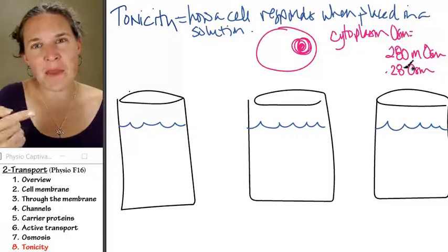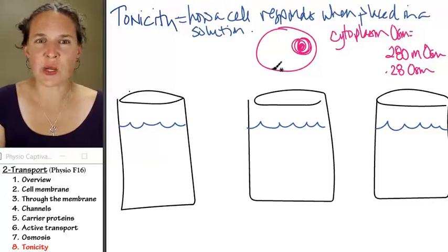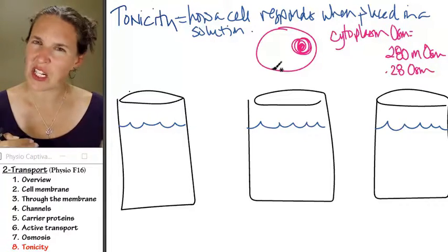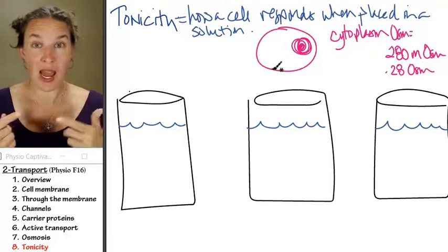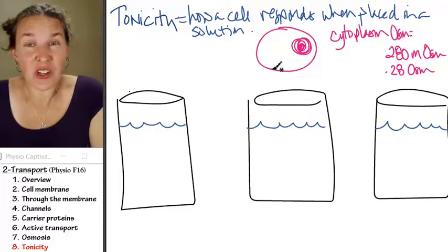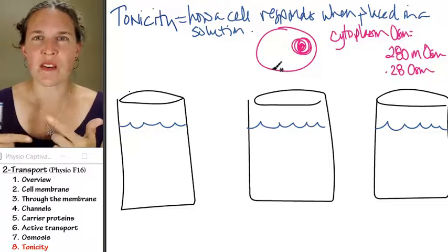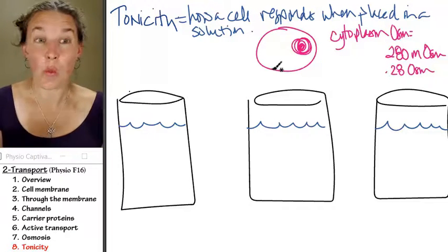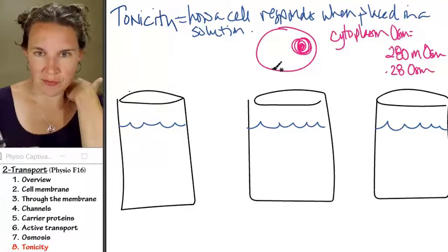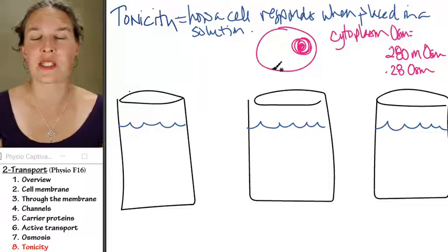And if you think about that, if a cell's cytoplasm has that concentration, you would expect the extracellular fluid to have that concentration because if it didn't, osmosis would happen. And we eventually are going to reach osmotic equilibrium, and so the concentrations would eventually change, which is what happens when you are dehydrated or overly hydrated.